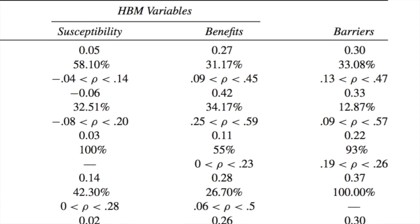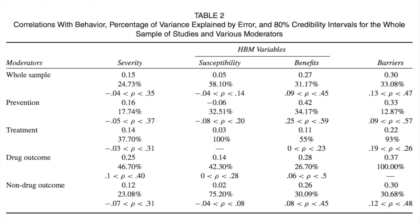For perceived benefits, the effect sizes are considerably larger when looking at prevention than treatment. Similarly, barriers seem to have a bigger effect for preventative behaviour than treatment behaviour. Exercise is most likely considered a prevention for most people — doing it to stop illness in the long run. For those using something to treat an existing illness, it doesn't seem to matter as much how beneficial it is or what the barriers are like, perhaps because they already know the benefits and barriers since they already have an illness.